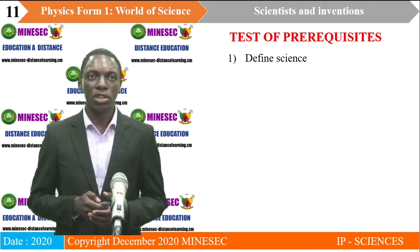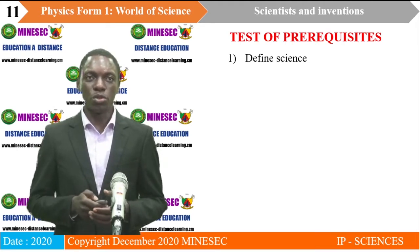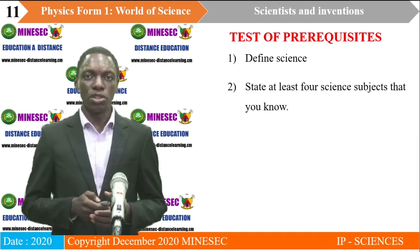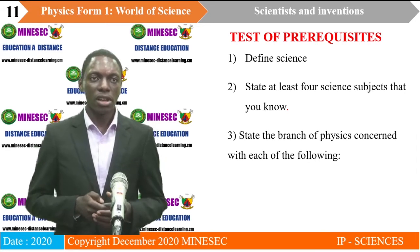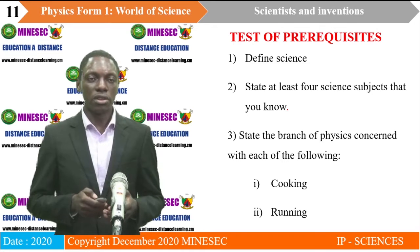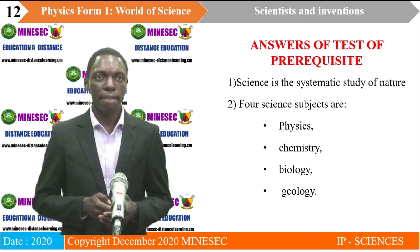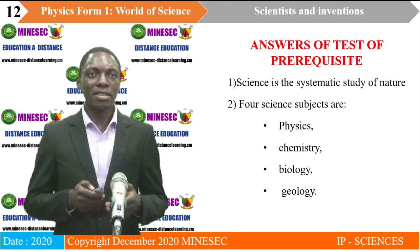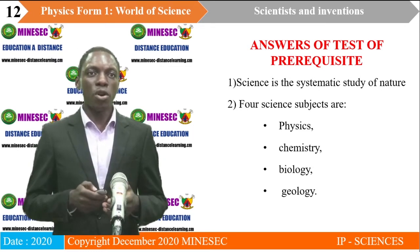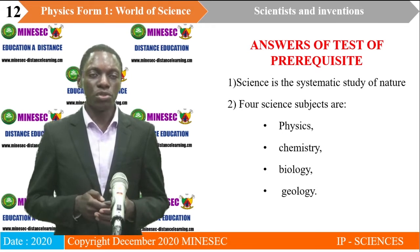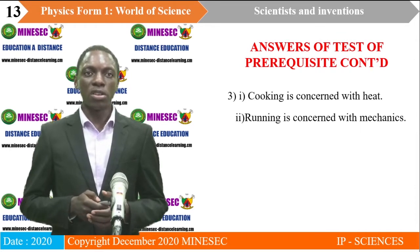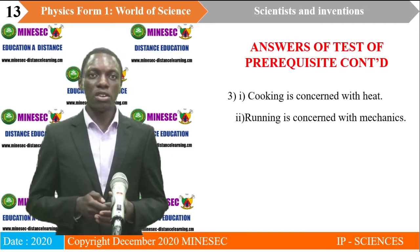Testing that prerequisite knowledge: question 1, define science; question 2, state at least four science subjects that you know; question 3, state the branch of physics concerned with cooking and running. The answers are: science is the systematic study of nature; four science subjects are physics, chemistry, biology and geology; cooking is concerned with heat, and running is concerned with mechanics.